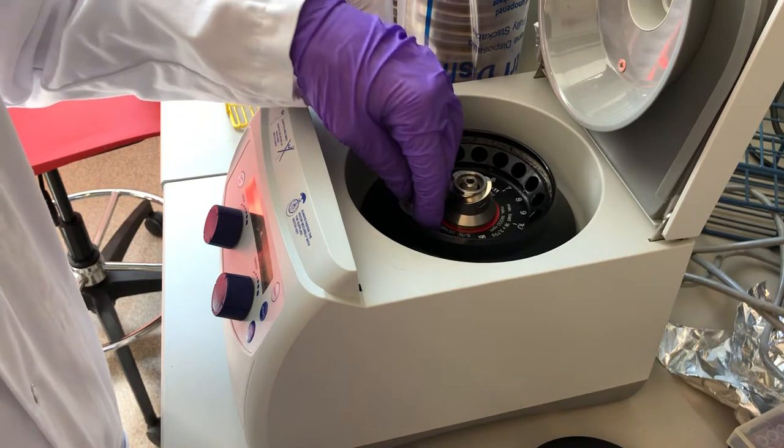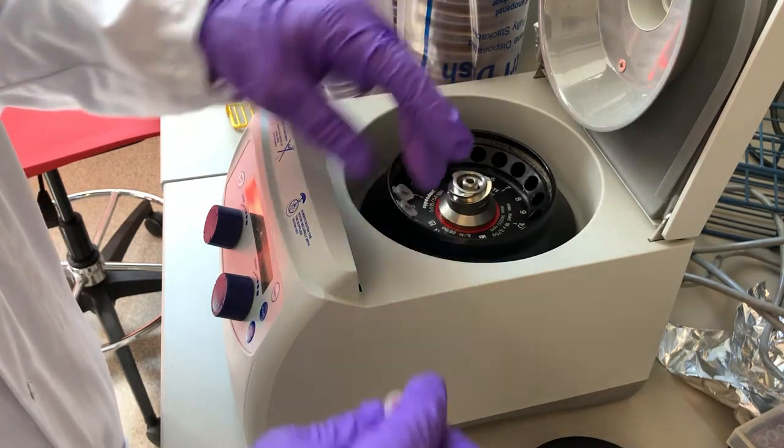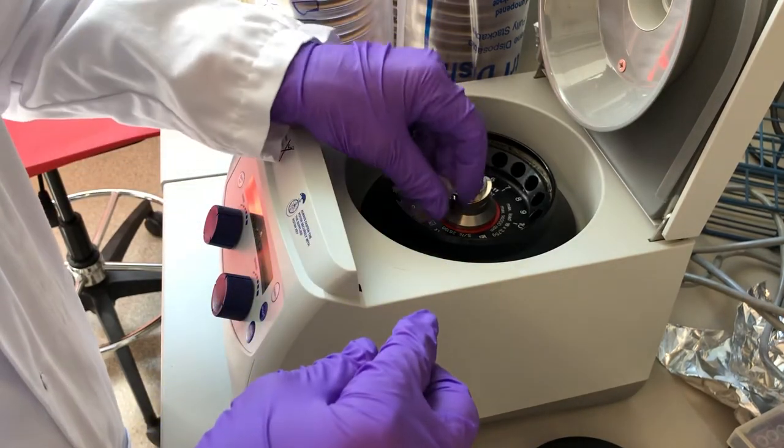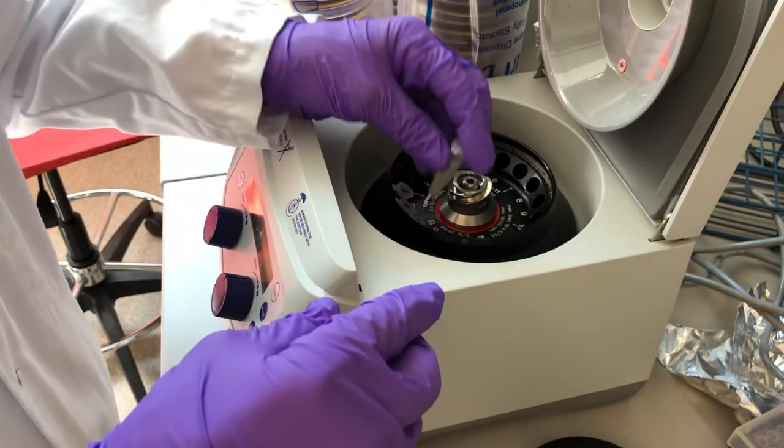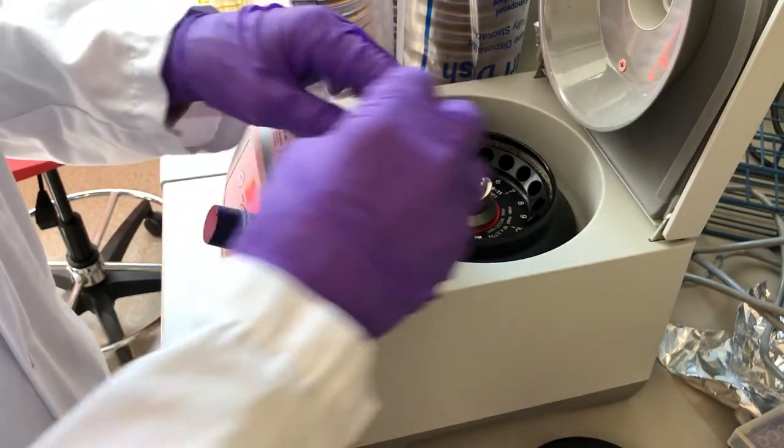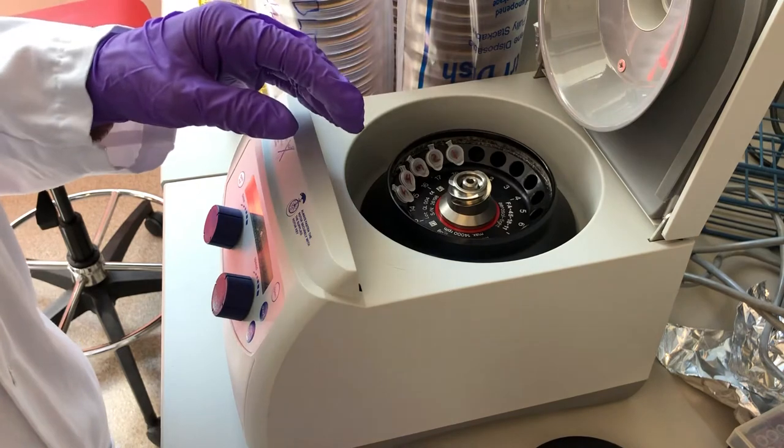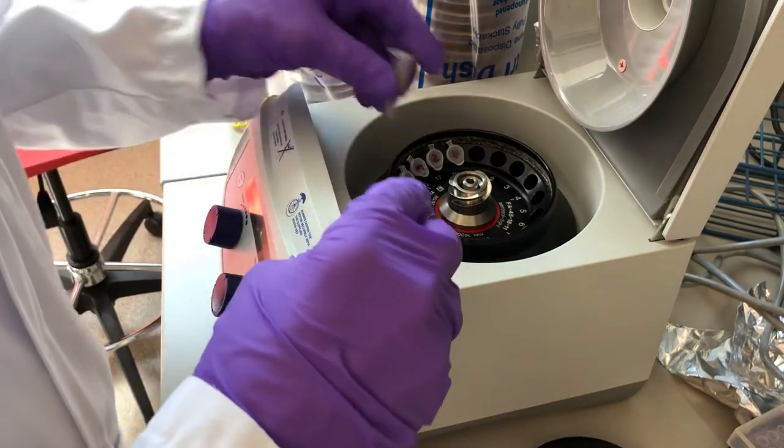I'm going to insert my tubes with the hinges of the lids facing out to the perimeter of the rotor. That way I know where the cell pellet is without having to look. Skip an empty space.